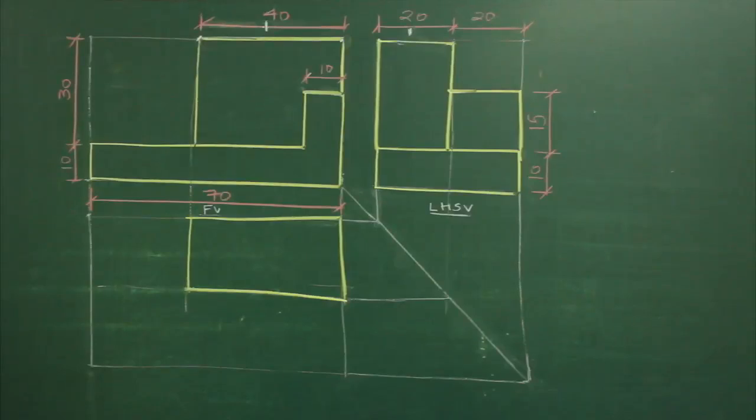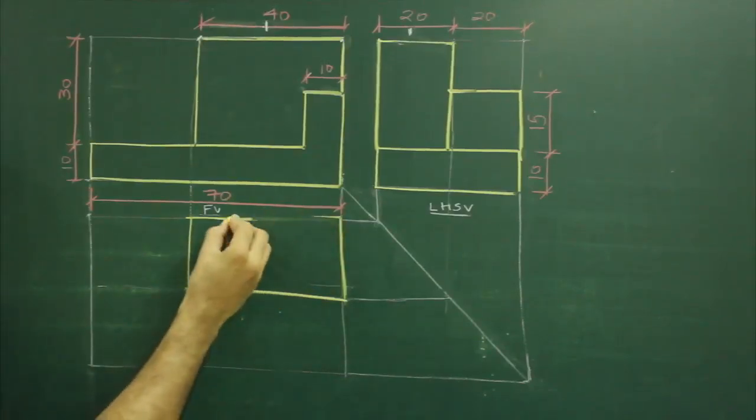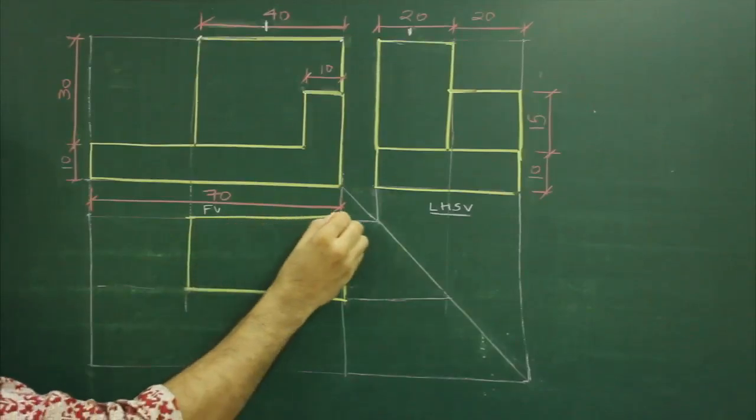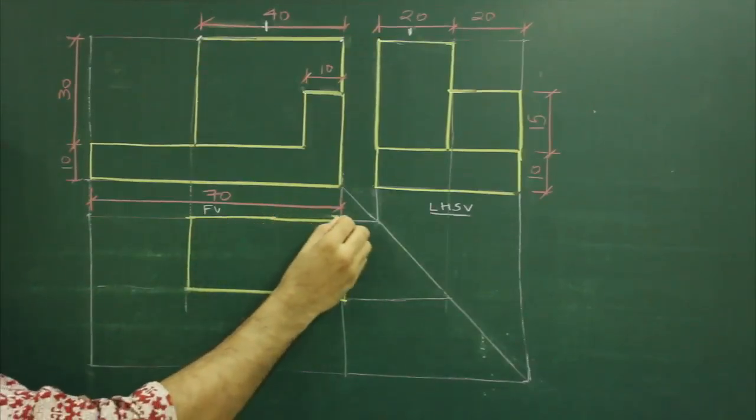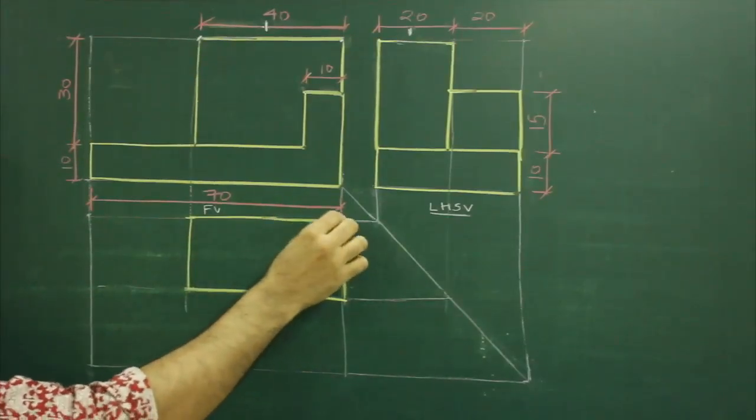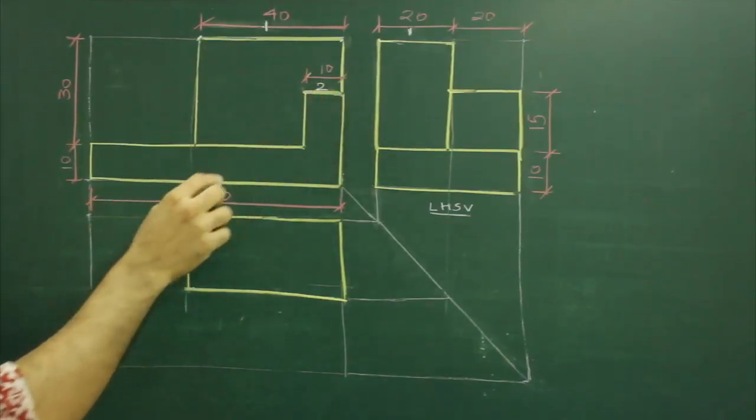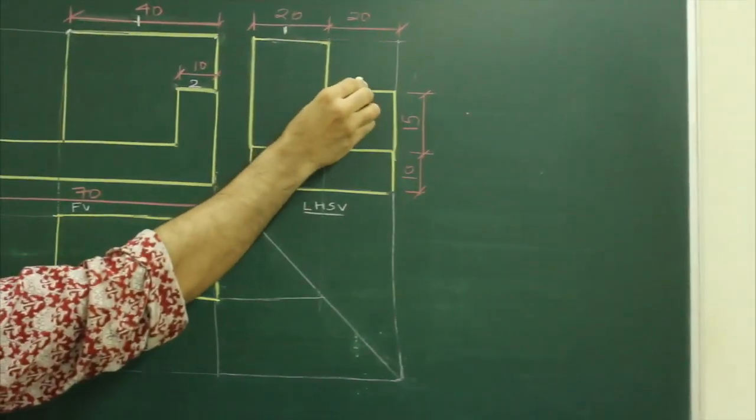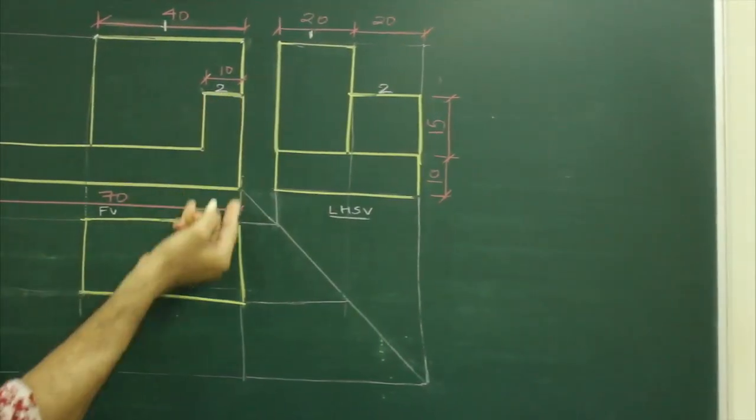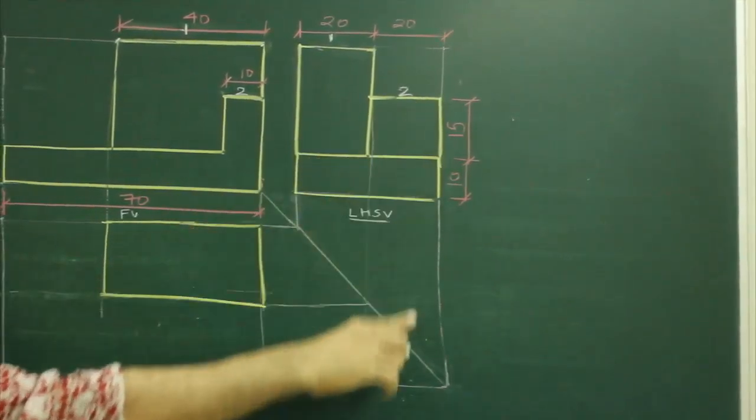After that, we will see surface number two, which is this and inside view is this. So we will project this part and we will project this part.